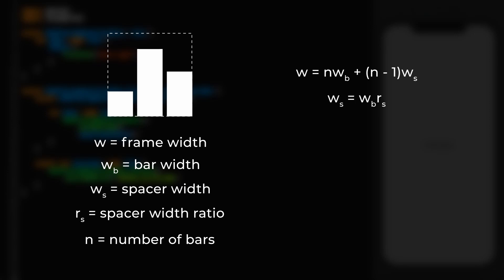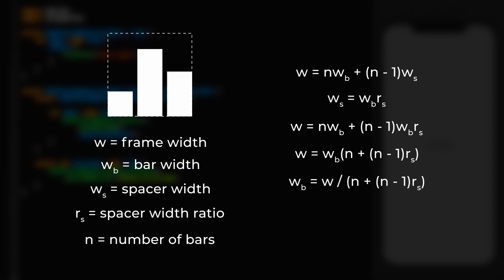We also know that the width of the spacer equals the bar width multiplied by the spacer ratio, so we can substitute that into the previous equation. The bar width is now a common factor, so we can rewrite it, and then rearrange to solve for bar width. Since we don't know the frame width upfront, we normalize by dividing both sides by W. This gives us a scale factor — bar width divided by frame width — that is completely independent of frame size, so it can be calculated upfront as a constant.